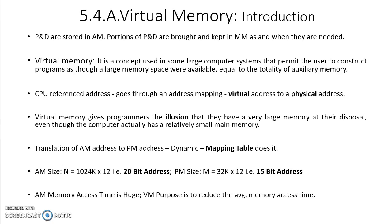In cache memory we observed that we are doing data transfer from a slow main memory to a fast cache memory — a slow and big main memory to a fast and small cache memory. The similar thing is going to be done in virtual memory. There, the two memories are cache memory and main memory, but here the two memories are auxiliary memory and physical memory or main memory.